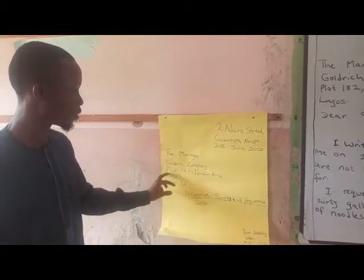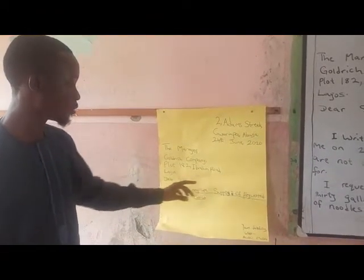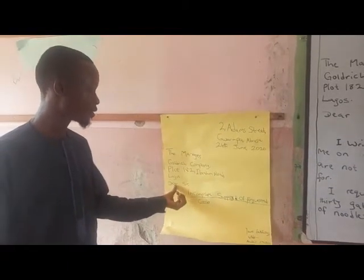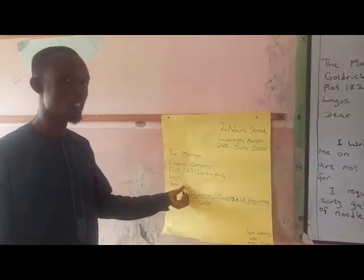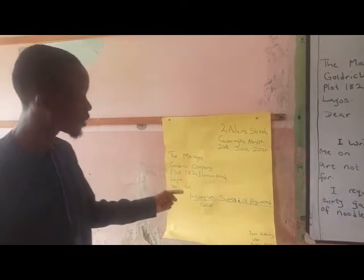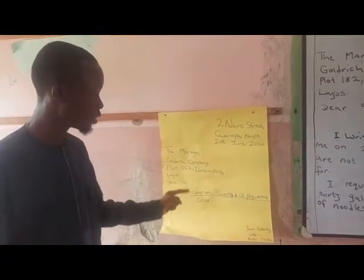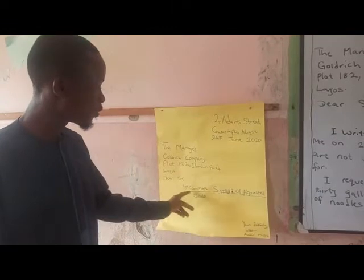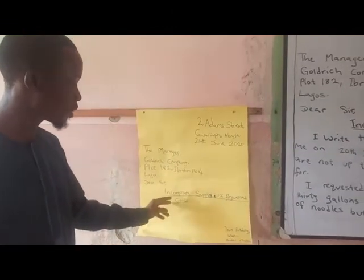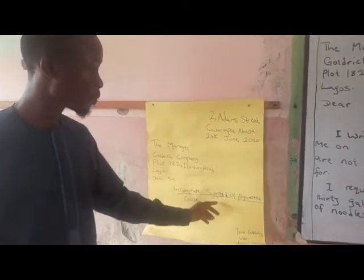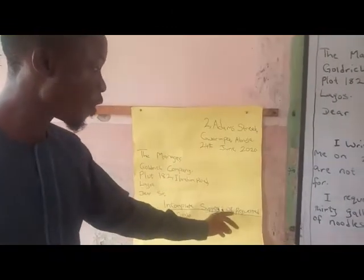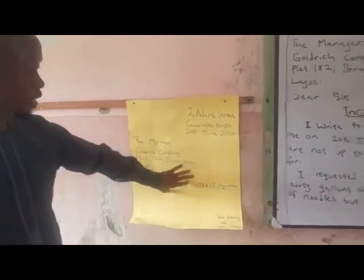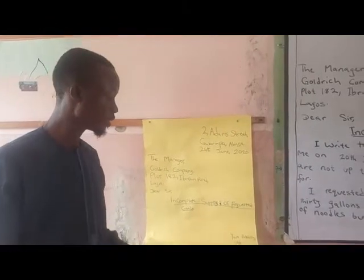The recipient's address is Goodrich Company, Plot 182 Ebrahim Road, Lagos. Followed by the salutation, which is 'Dear Sir.' Now remember that the formal letter has a topic — that is what you want to talk about. For this formal letter, the topic is 'Incomplete Supply of Requested Goods.' That is what the writer wants to talk about in this letter.